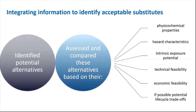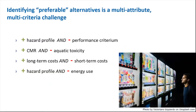Now it's time to integrate all of this information — hazards, exposure potential, performance and cost — to assess tradeoffs among the options and ultimately make a substitution decision. A typical alternatives assessment may deal with dozens of different attributes. A more detailed assessment may have even more attributes to consider, for example if life cycle impacts are included. It is very uncommon for one alternative to be superior to all others on all criteria. Some tradeoffs will likely exist.